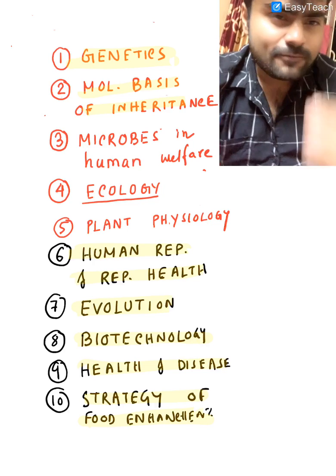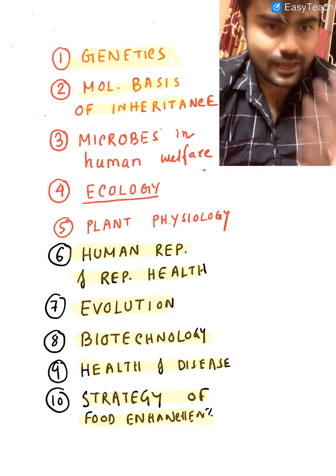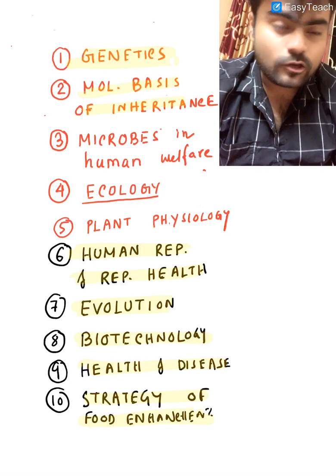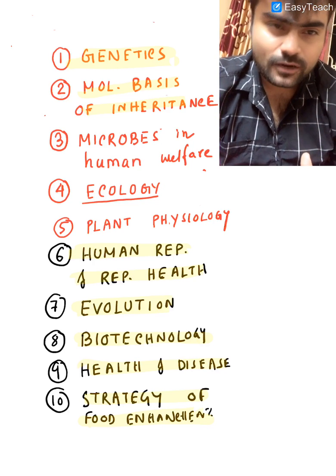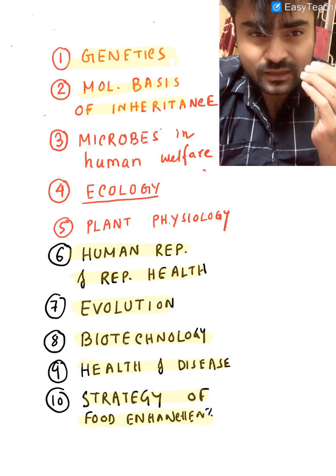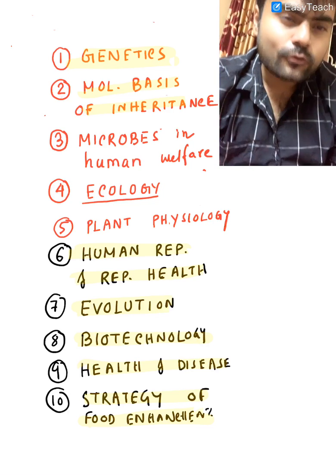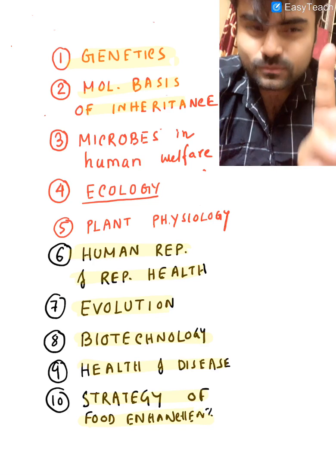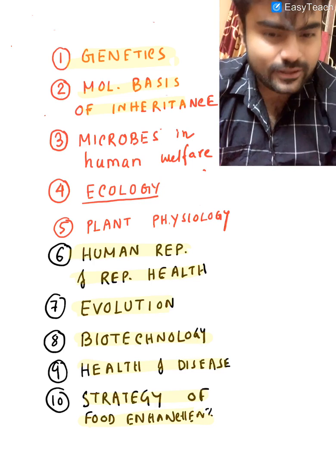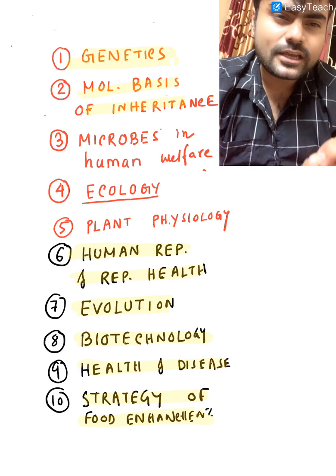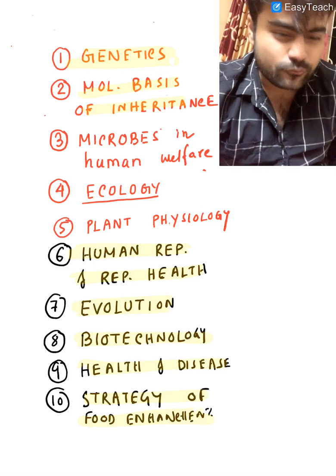I hope you write down every point I am telling. Tick mark all the points before going to the exam. Next, evolution — it is again a very, very important topic. You have to know about the Hardy-Weinberg principle, and the four key concepts: divergent, convergent, homologous, and analogous organs. One to two questions can come just from these four things. You also have to know about adaptive radiation and cranial capacity of the brain. From evolution, you can expect at least five to six questions.